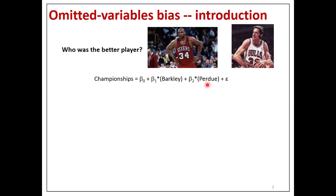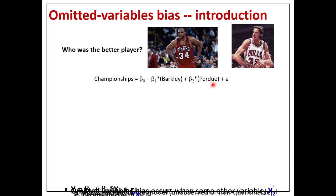If you run a regression like championships equals beta zero plus beta one times Barkley plus beta two times Will Purdue, what you're going to get is a zero for Barkley and a four for Will Purdue. Will Purdue had four championships, Barkley had zero, even though Barkley was one of the top players ever and Purdue was just a benchwarmer. What's happening is that there are some huge omitted factors here — Michael Jordan and Scottie Pippen, who Will Purdue played with on the Chicago Bulls for three championships, plus Tim Duncan and David Robinson when he played for the San Antonio Spurs. Barkley never had anyone like that on his teams. So Will Purdue is getting credited for the effects of those omitted factors.